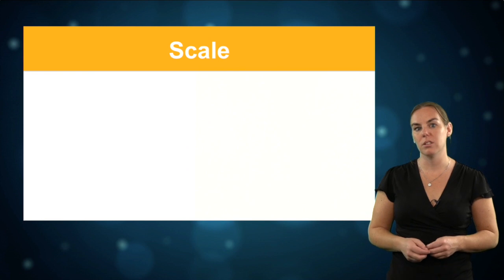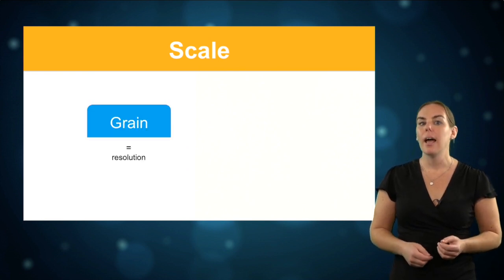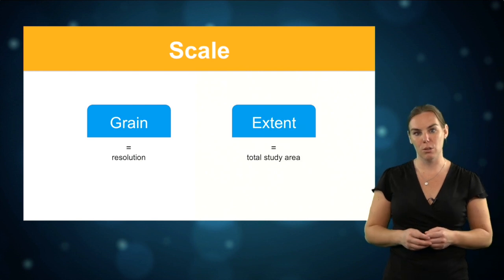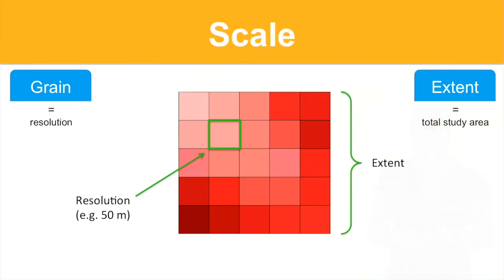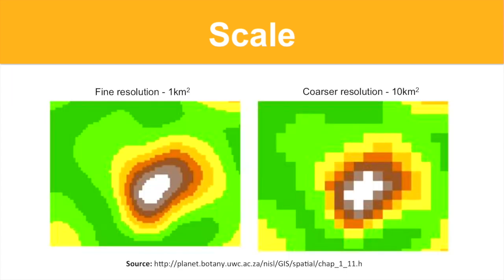Another important aspect of both species and environmental data is scale. Spatial scale has two components: grain, which is the resolution of your data, and the other component is extent, which is the total study area. So in this image, grain resolution is the size of one individual grid cell and refers to the sample resolution of a single observation. In other words, at what scale is occurrence data of a particular species or measurements of a particular environmental factor collected? Extent refers to the total geographic area of a study. For example, habitat type can be defined in grid cells of one square kilometer or 10 square kilometers, which we refer to as fine versus coarser resolution.